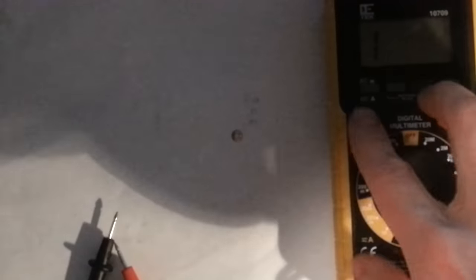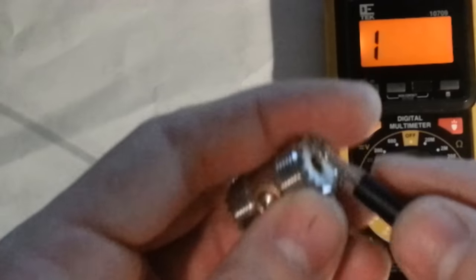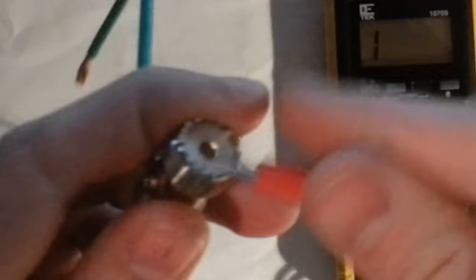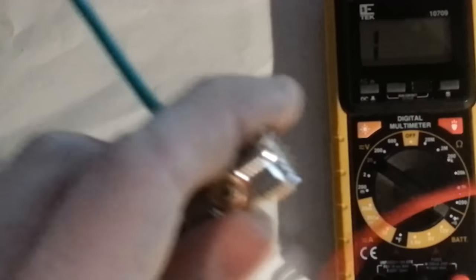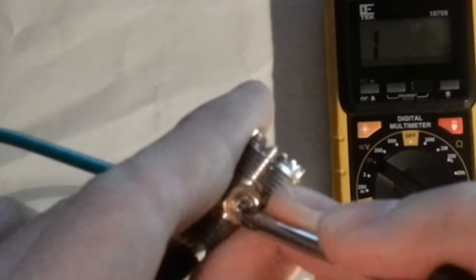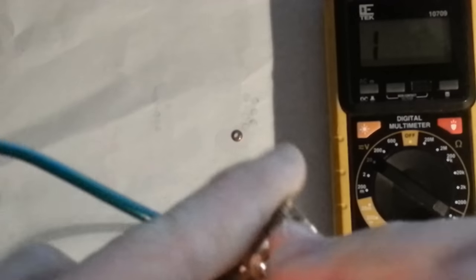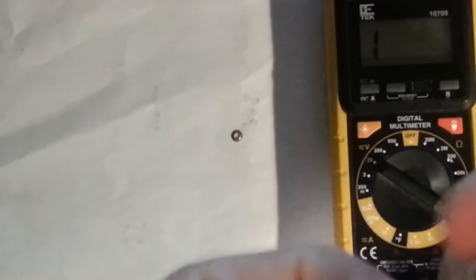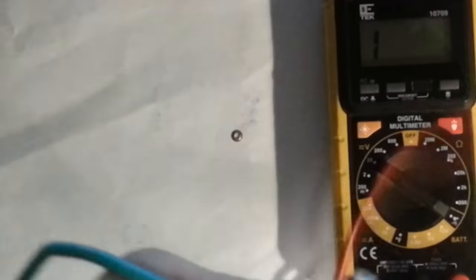I've got it screwed on and I've got my multimeter on continuity mode so it beeps with a short circuit. Obviously the first thing to do is make sure that's working, and then make sure it's not shorting. So we tighten it enough so that it does short.